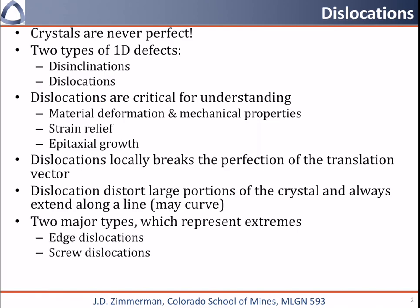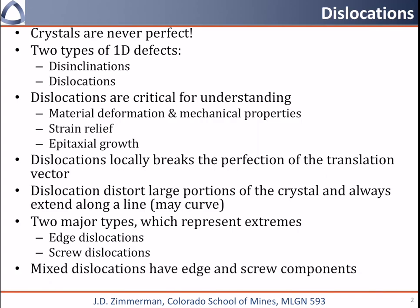There are two major types of dislocations: edge dislocations and screw dislocations. These represent the extremes of the types of dislocations you can have. You can also have things that are somewhere in between an edge and a screw, and we call that a mixed dislocation.